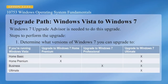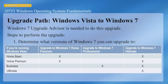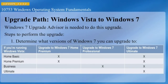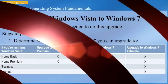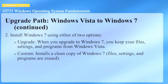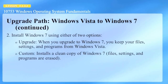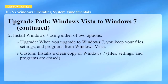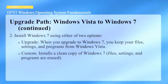Here's the upgrade path from Vista to Windows 7. You want to determine which version of Vista you have. If you have Vista Basic, you can only upgrade to Windows 7 Home Premium. If you have Windows Vista Ultimate, you can upgrade to any version of Windows 7. When installing Windows 7 from Vista, you have two options: an in-place upgrade, which keeps all your files, settings, and programs; or a clean install, which requires you to transfer all your files, settings, and programs back onto the system after they've been erased.